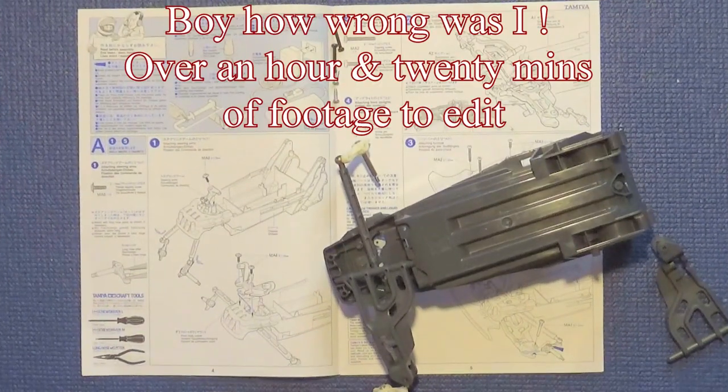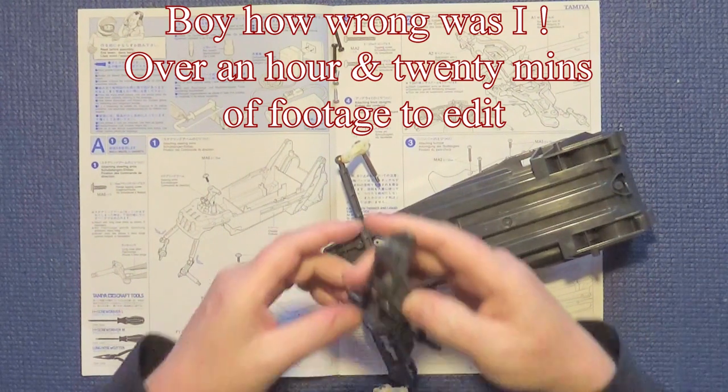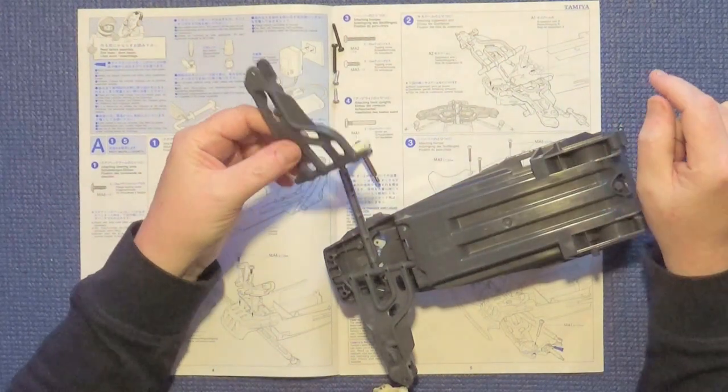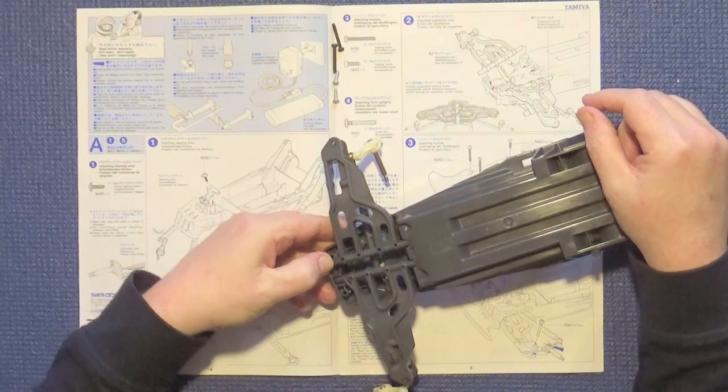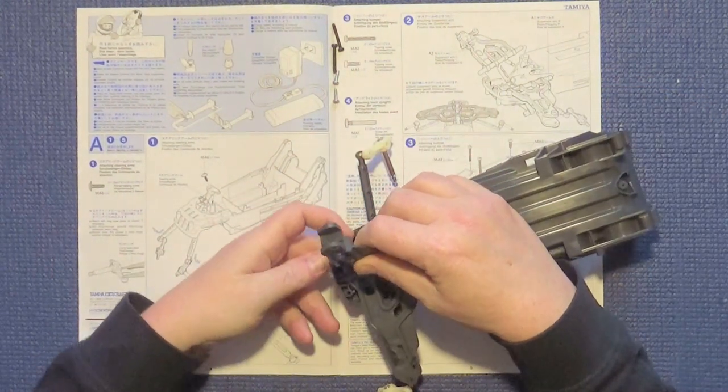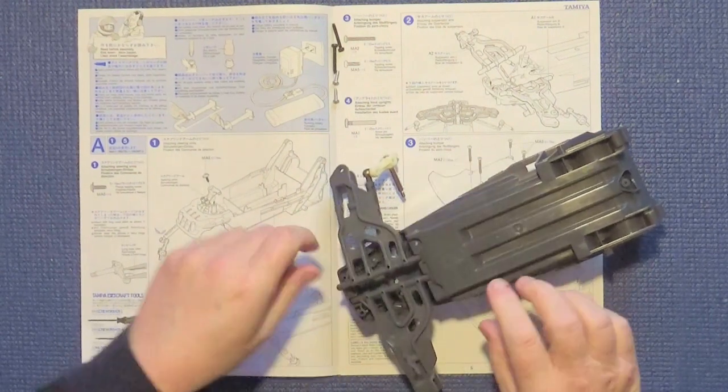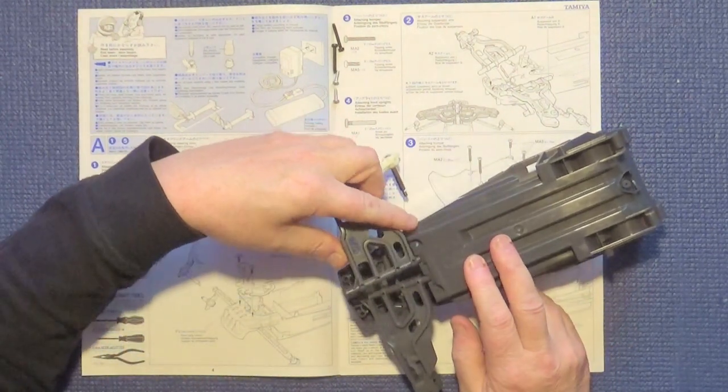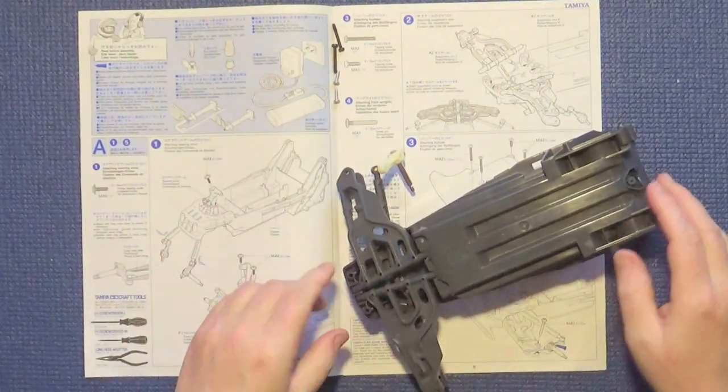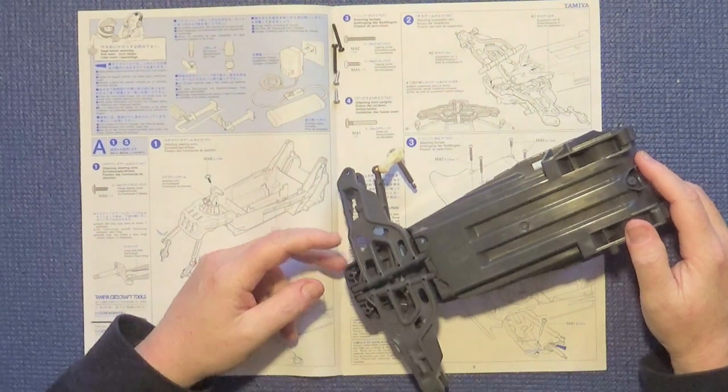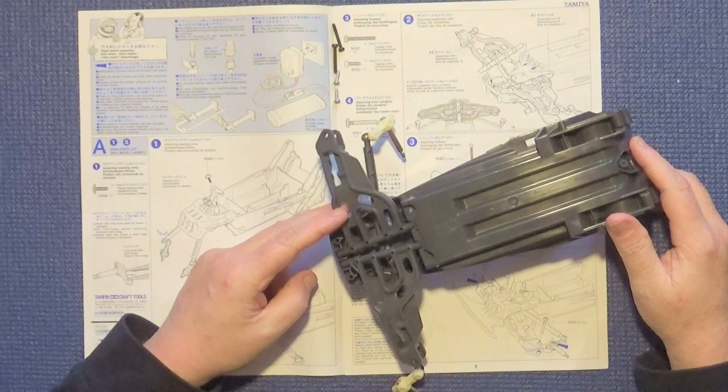I think this is going to be a quick build because step two is just putting these lower wishbones into the chassis. Doing that's trickier than you think.